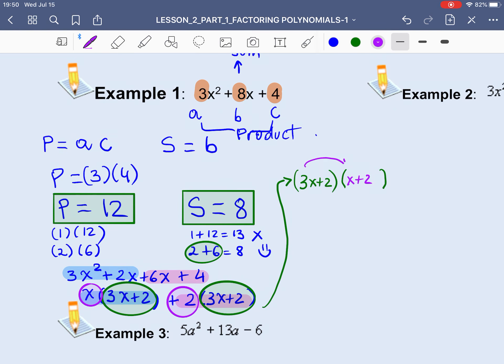If you want to check, go ahead and expand. Remember, expanding is the opposite of factoring. So we have 3x². 3x times x. 3x times 2 is 6x. 2 times x is 2x. 2 times 2 is 4. So that's 3x² + 8x + 4. And that's how we check our answers.